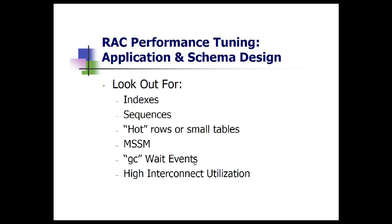From an application perspective, a couple of things to look out for: indexes, sequences, hot rows or small tables. Manual segment space management needs to be configured correctly for RAC. Most people are using automatic segment space management now, which is generally recommended. If a system has manual space management, you need to make sure you're using enough free list groups. Any wait events with the letters GC in them are usually tied to something related to the interconnect or cluster-specific issues. High interconnect utilization is also a flag.